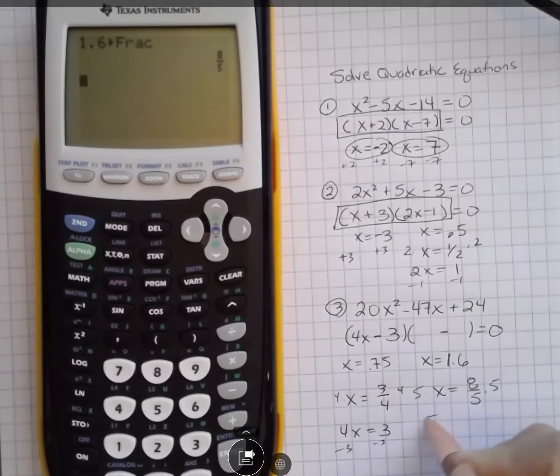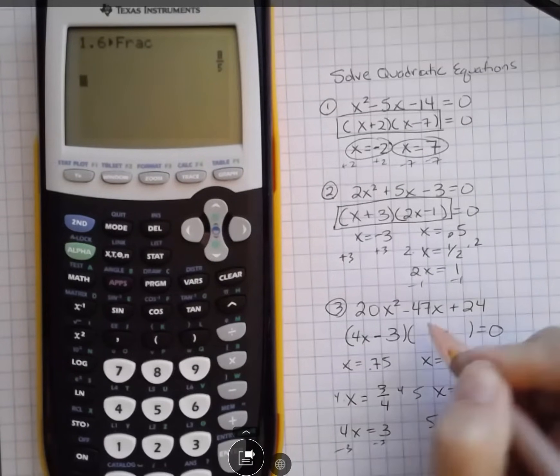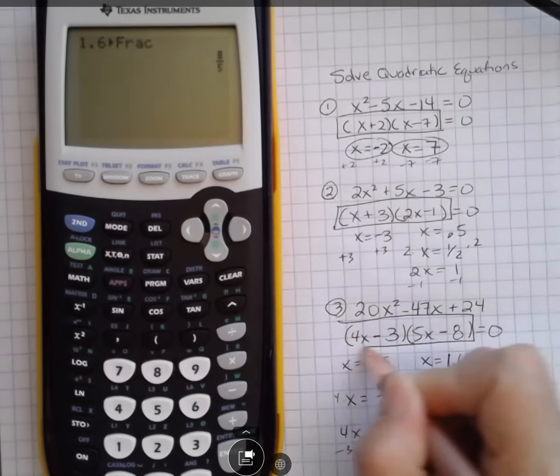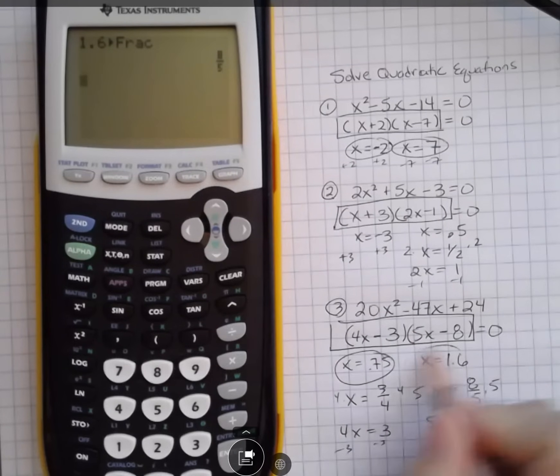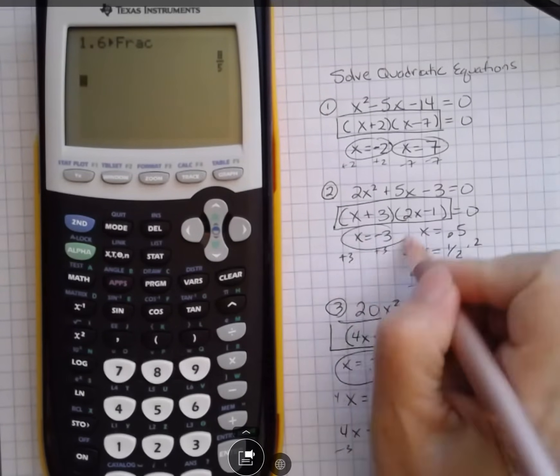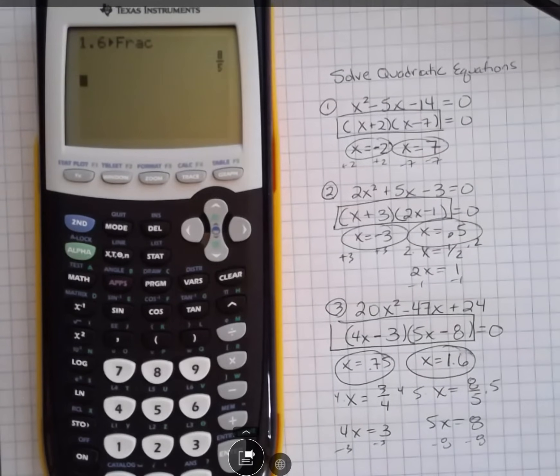Okay, so I have 8 fifths as my fraction. Multiply both sides by 5, I get 5x equals 8, and then I move that 8 over and I get 5x minus 8 if I was wanting to find my factored form. If I was just looking for the solutions, that's what the calculator gives me, and then I can go backwards and get that factored form.